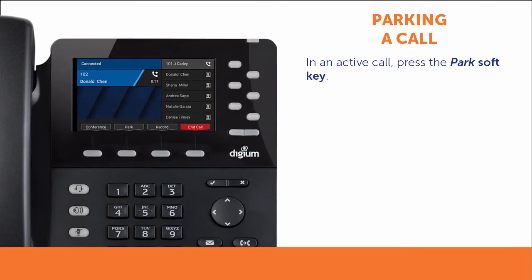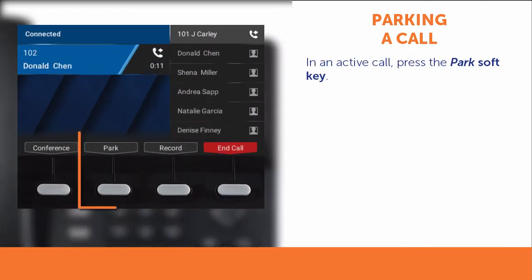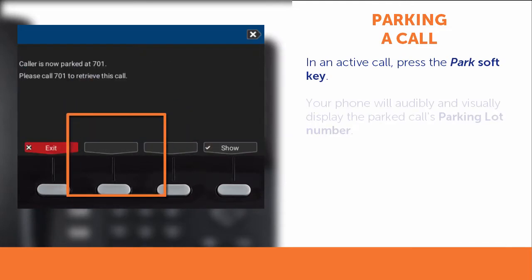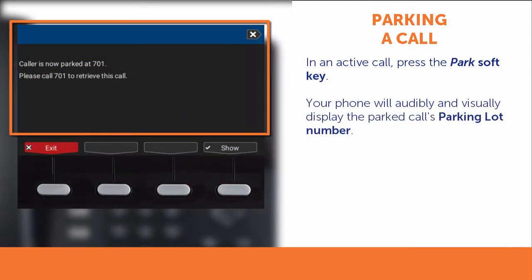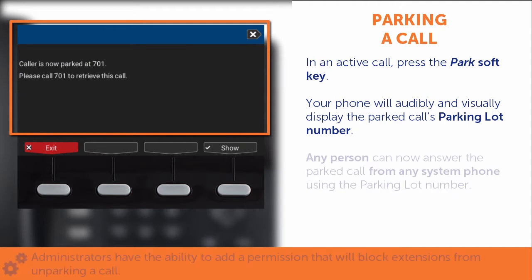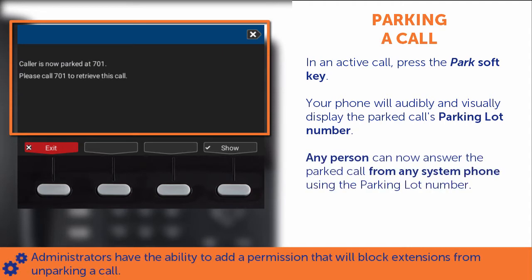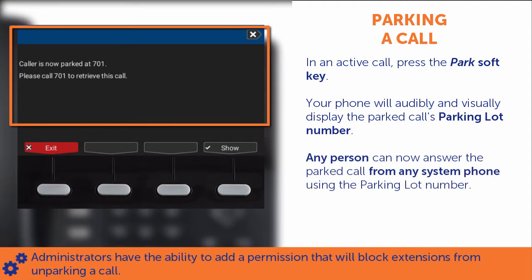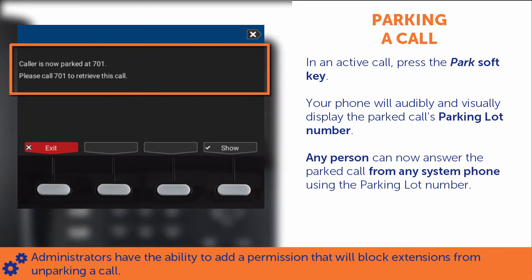While in an active call, press the Park soft key. Your phone will audibly and visually display the parked call's parking lot number. Now you, or a co-worker, using that parking lot number, can answer the call from any other system phone.